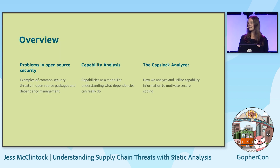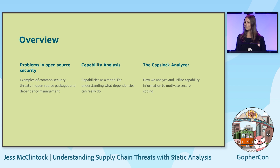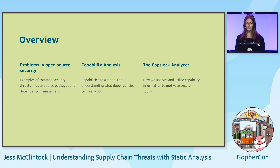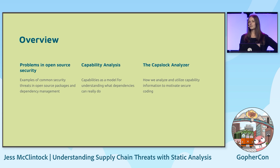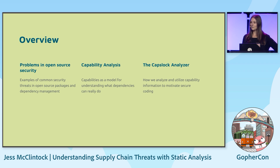Here's a bit of an overview of how this talk is going to be structured. First, I'm going to introduce several different types of problems that we see in open source security and how they relate to dependencies, and also give a few examples. Then I'm going to introduce the concept of capability analysis and how this can help mitigate these types of problems. And finally, I'm going to use our analyzer called CapsLock and give some examples of how you can use it.